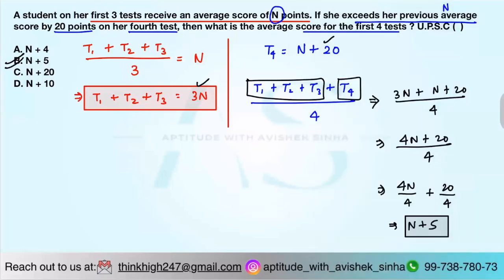A student asks: I could not understand why T4 is taken as n plus 20 if it is said that it is the average. The instructor explains: It exceeds her previous average by 20. T4 is the value that is exceeding the previous average by 20 points, so the value for T4 is n plus 20. Okay, thank you.